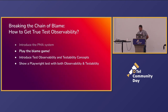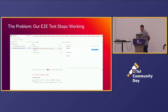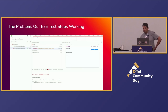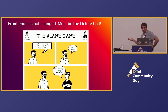Let's play the blame game. What's the problem? Our end-to-end test has stopped working. Our Playwright test is broke, it stopped our pipeline. We've got to see what the problem is — we do an import and then we delete a Pokémon. Well, the delete Pokémon Playwright test failed. So, obviously, the delete function must be broken.